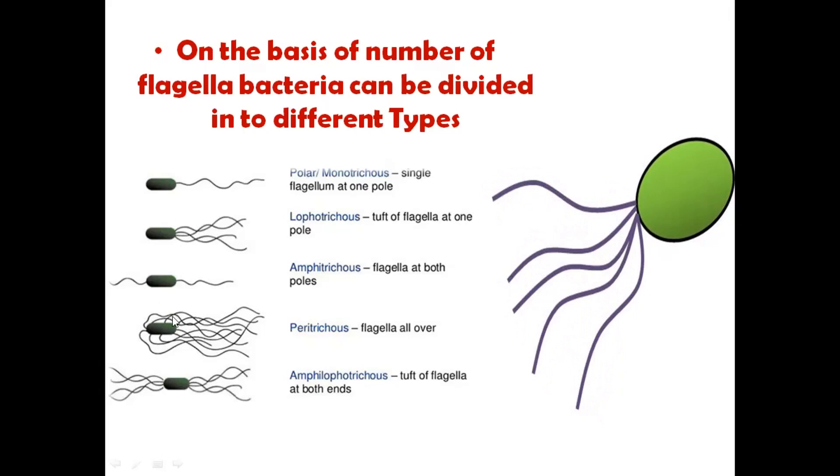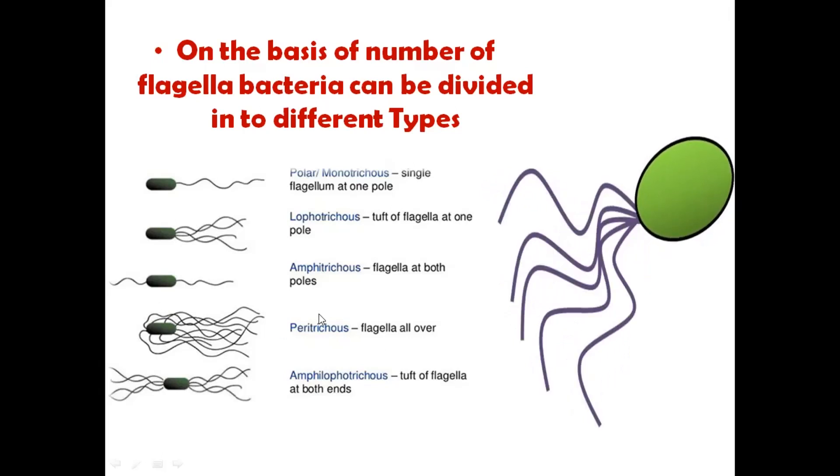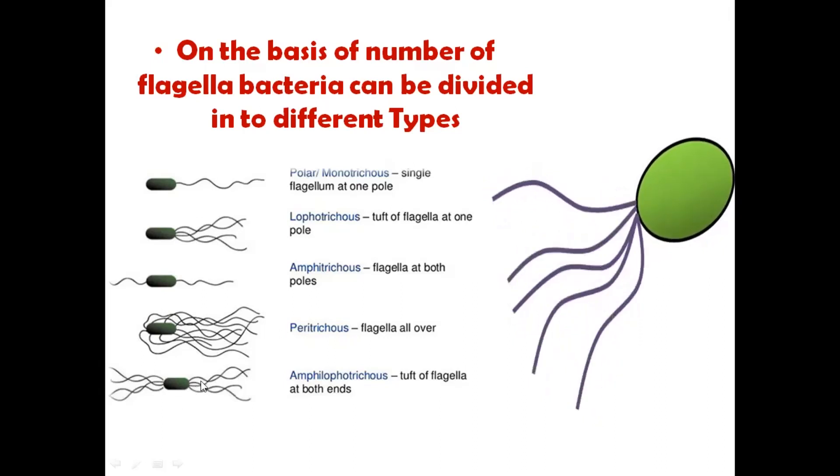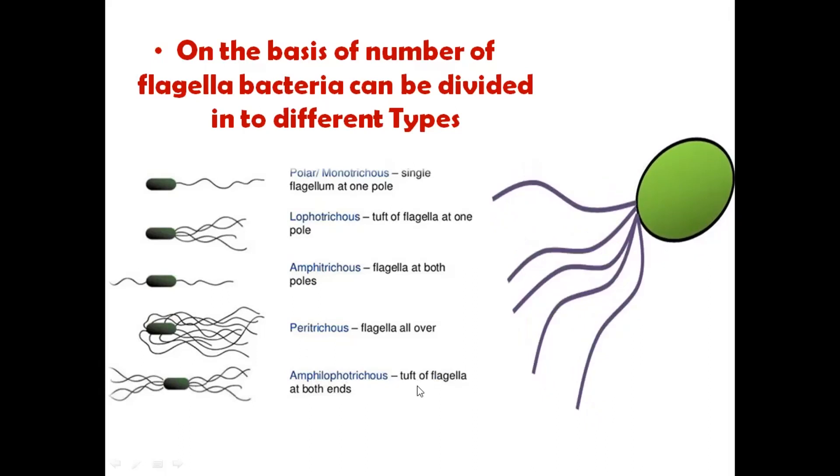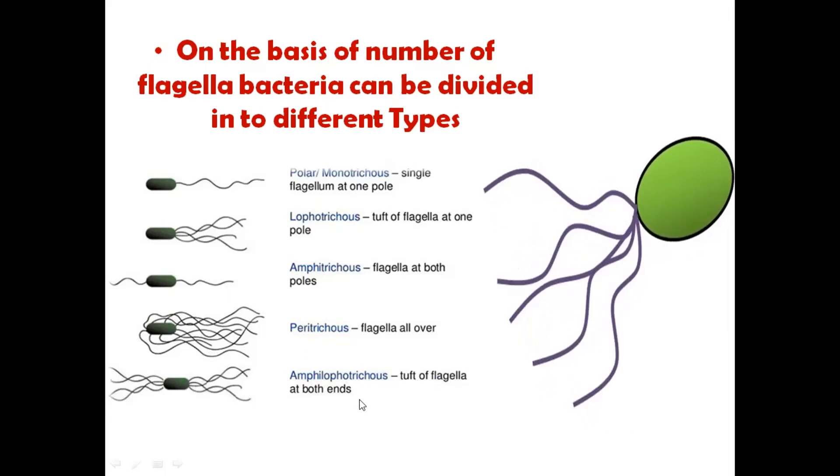If bacteria all over the body, all over the bacterial cell, have flagella protruding out, then you can see that bacteria as peritrichous. It can be classified as amphilophotrichous when tuft of flagellum is present at both ends.